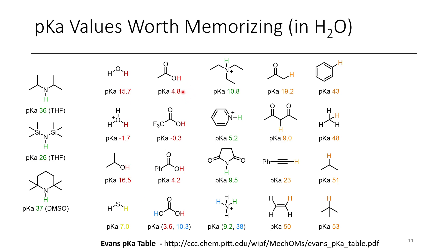Looking at carboxylic acids we'll see a trend: acetic acid has a pKa of about 5. TFA has a pKa of around 0. Benzoic acid has a pKa of around 4, and carbonic acid's first proton has a pKa of 3.6. However, the bicarbonate ion has a pKa of 10. For nitrogen-containing compounds, triethylamine in its protonated form has a pKa of 10.8. Pyridine has a pKa of 5.2 when protonated, while succinimide in its neutral form has a pKa of 9.5. Ammonium has a pKa of 9.2, but if you want to deprotonate a second nitrogen it is way less acidic with a pKa of 38 — the highest on the chart so far.